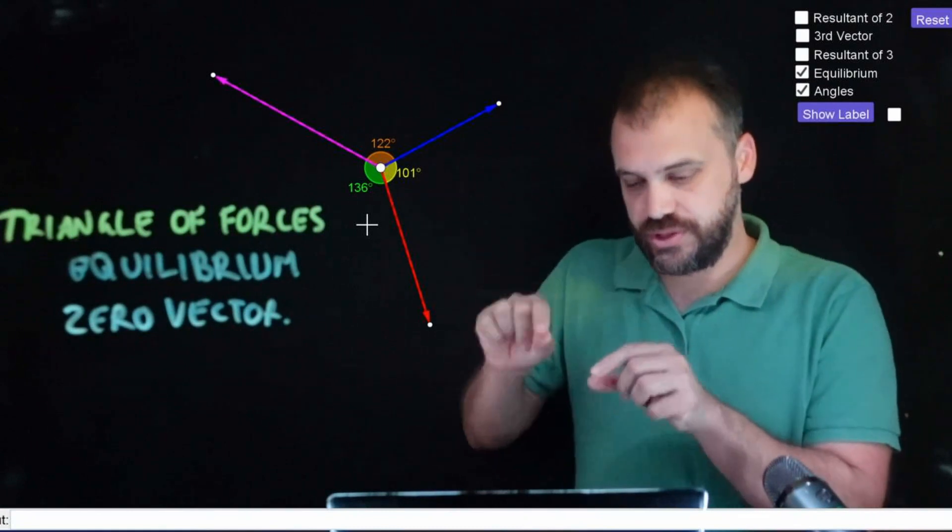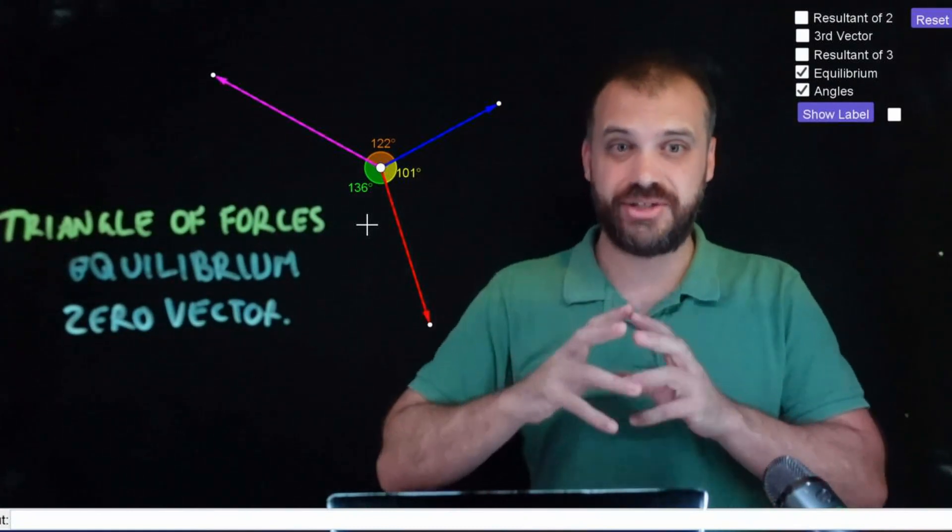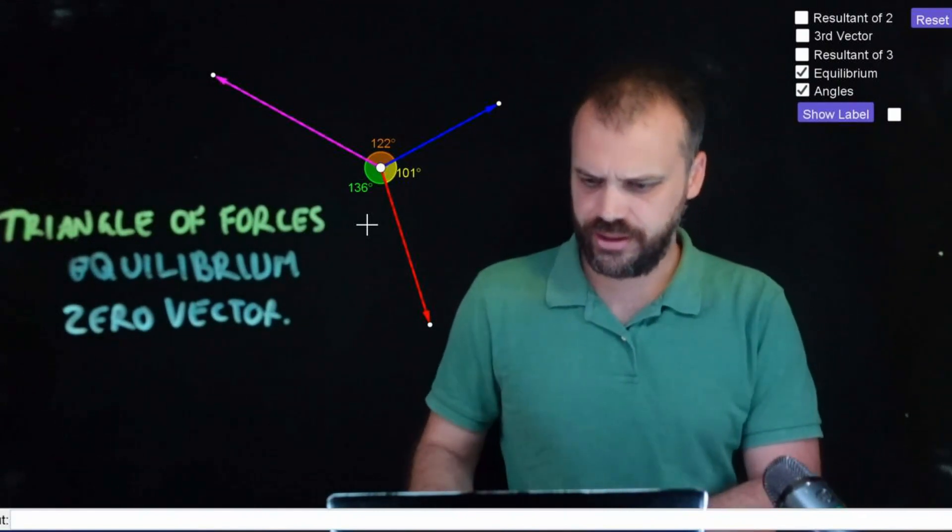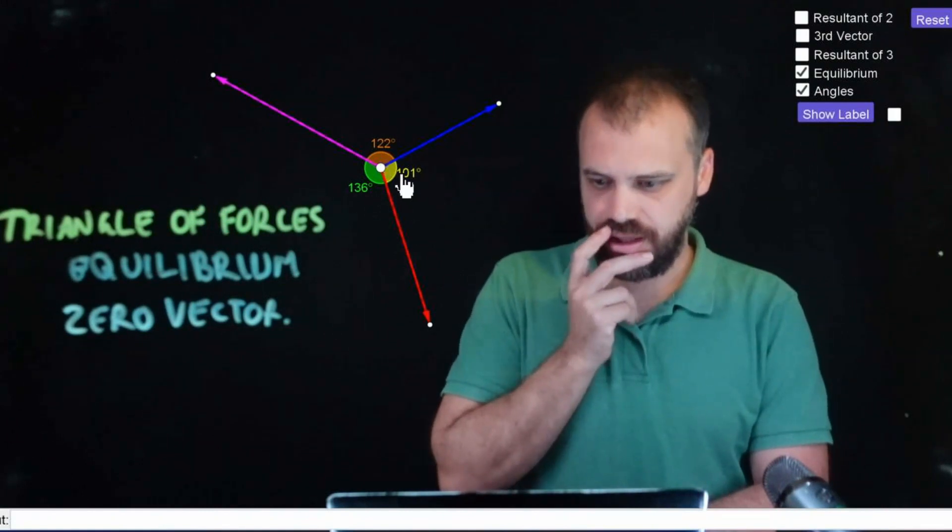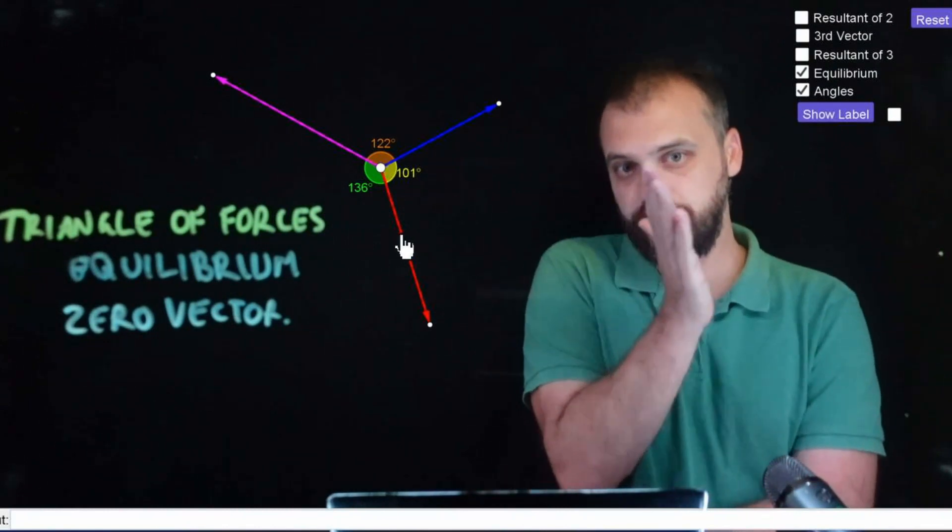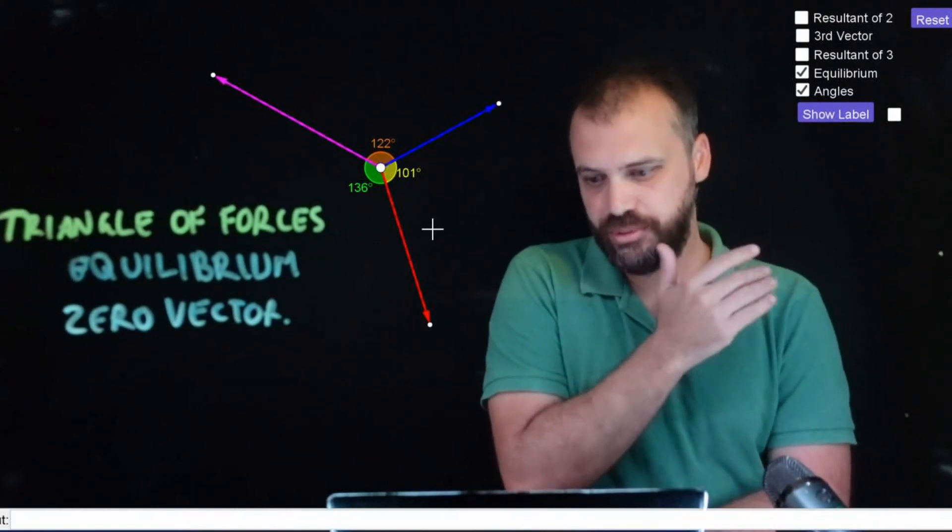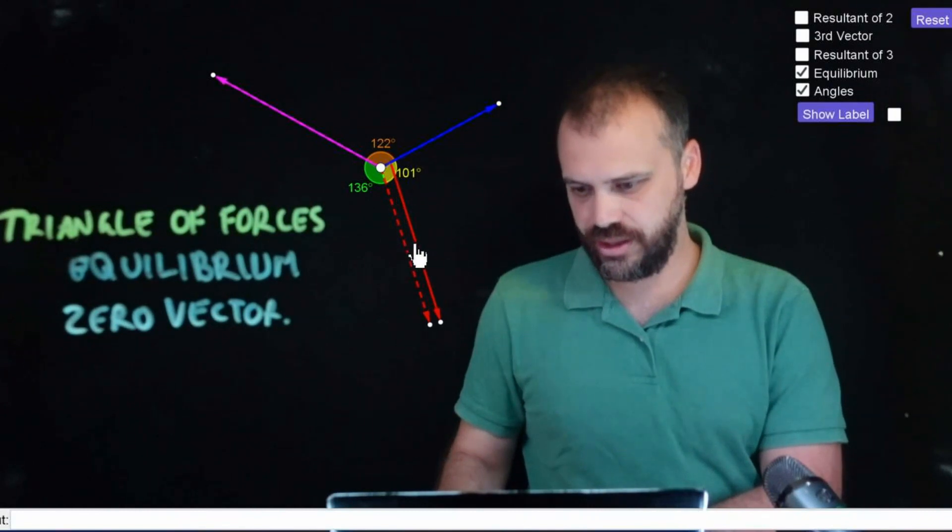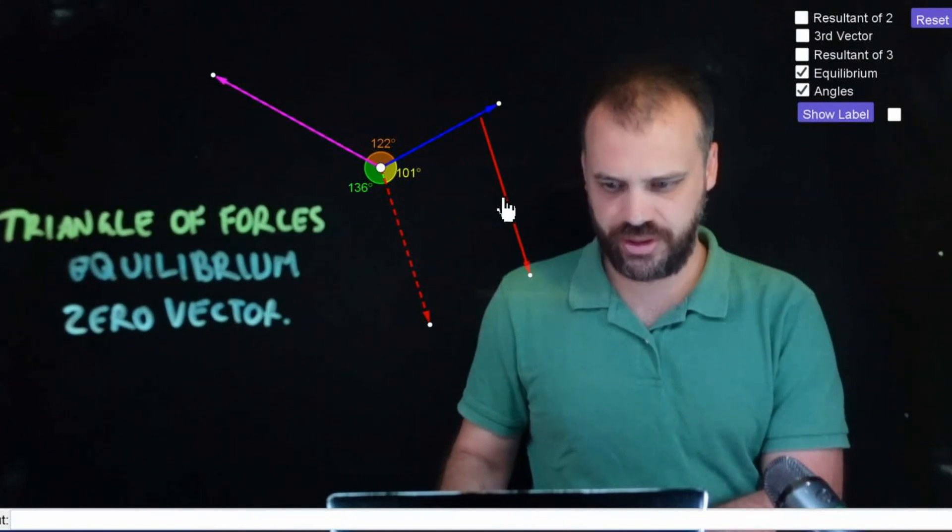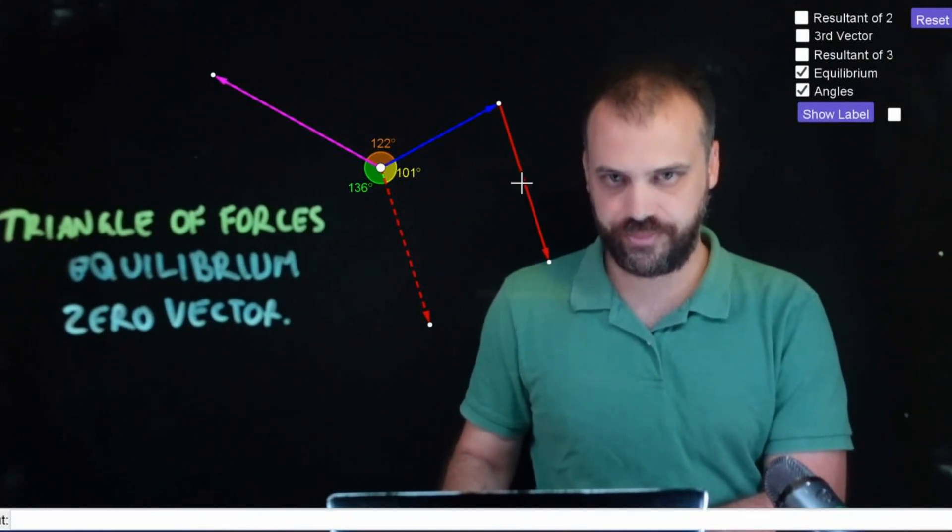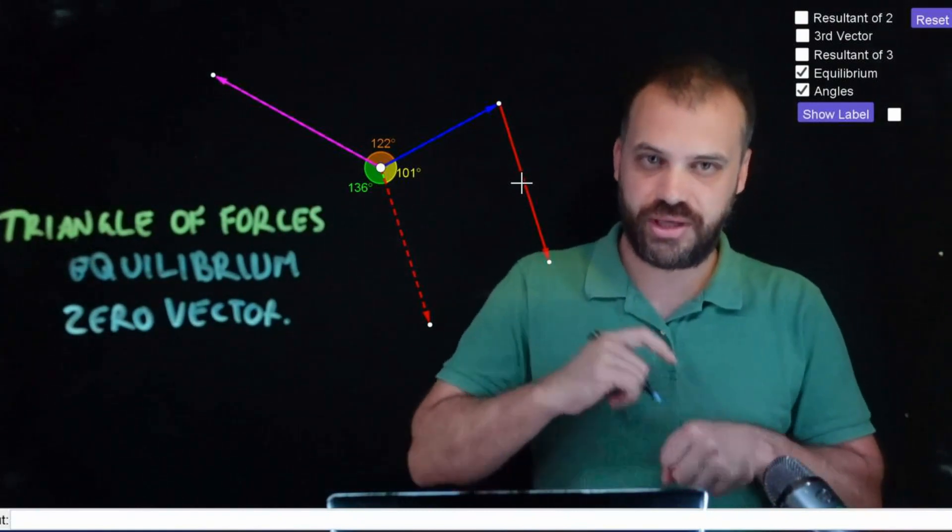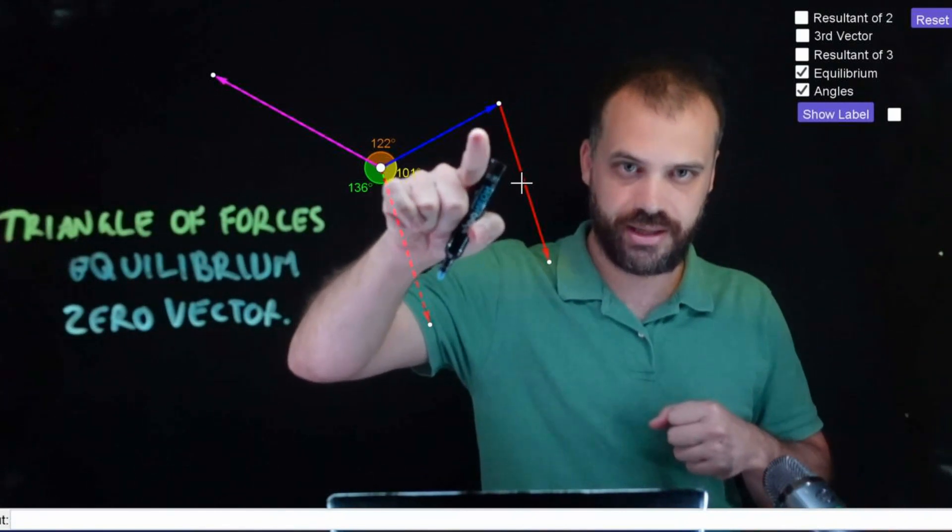Now, when you transform this from three vectors acting on an object into a triangle of forces, I want you to think about sliding. So, I'm going to take this one here and I'm going to slide this blue vector, this red vector along the blue vector up to the tip of it. Sliding it up. Look at me sliding it up. Keep sliding it up until I get to the tip.